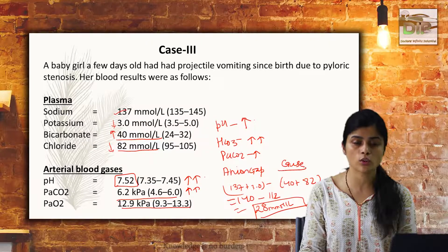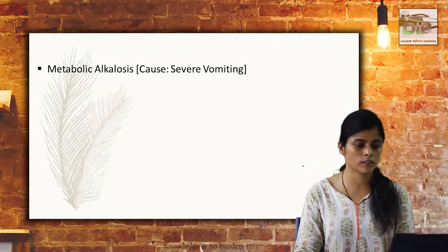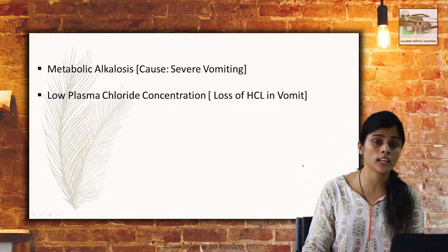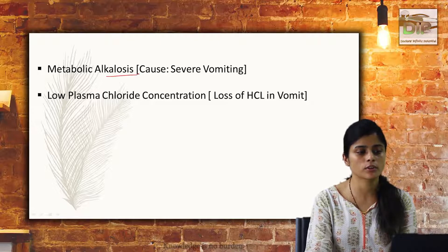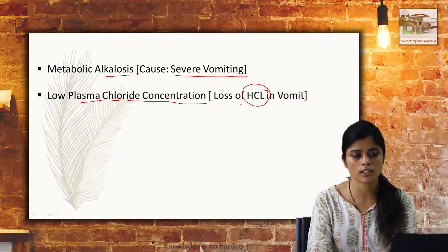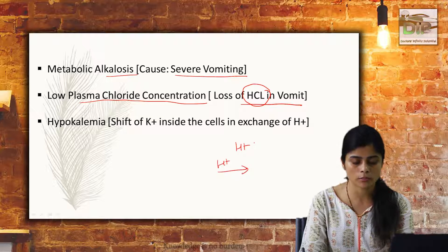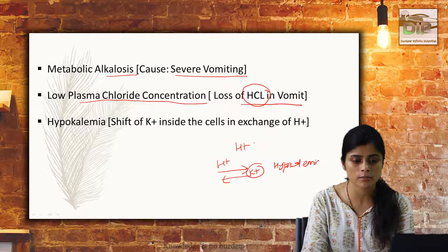The fifth thing to keep in mind is the cause. The cause of the metabolic alkalosis is pyloric stenosis with persistent vomiting — more amount of HCl being lost by vomiting, causing the scenario of alkalosis. There is metabolic alkalosis mainly because of severe vomiting. There is low plasma chloride concentration because of the loss of protons as well as HCl in the vomit. Hypokalemia occurs because H+ is present in lesser amounts in plasma, so H+ moves from cells to extracellular space and potassium moves inside, leading to hypokalemia.